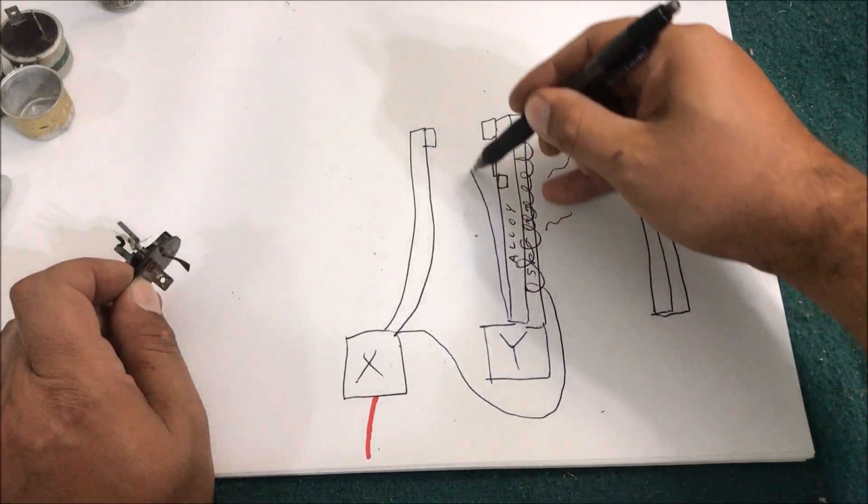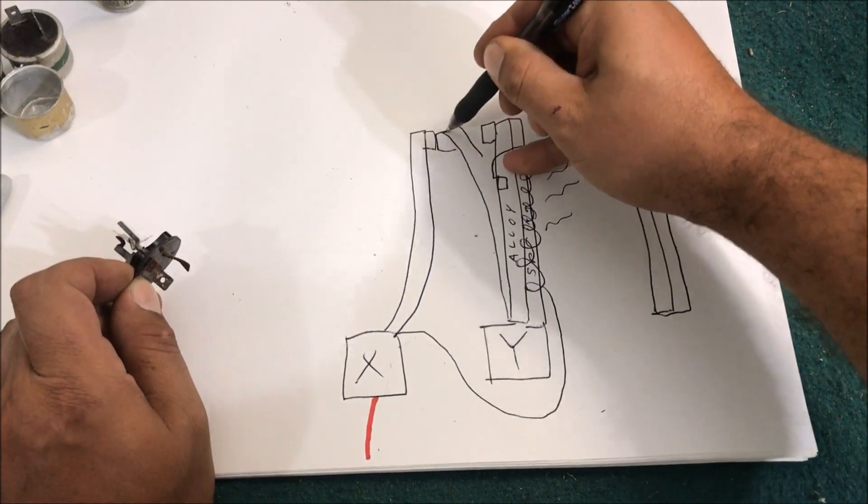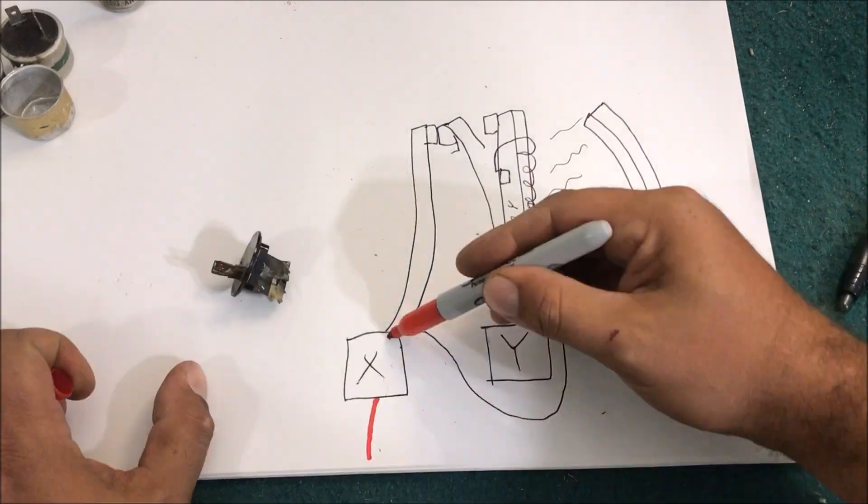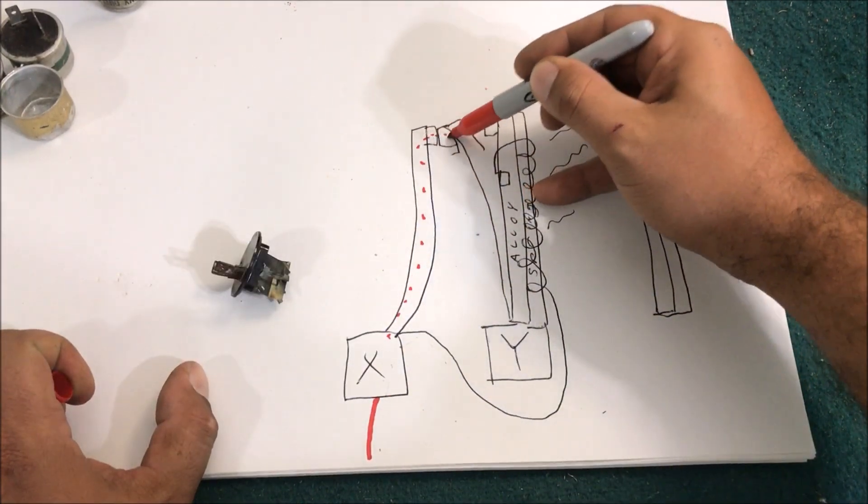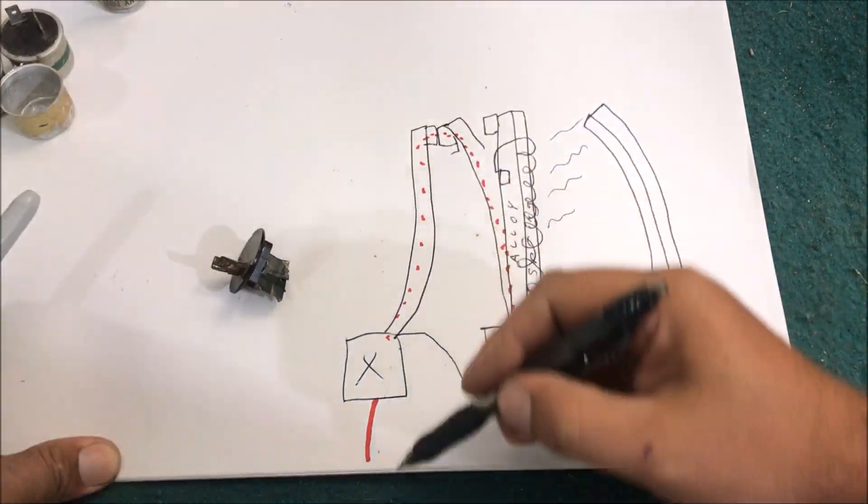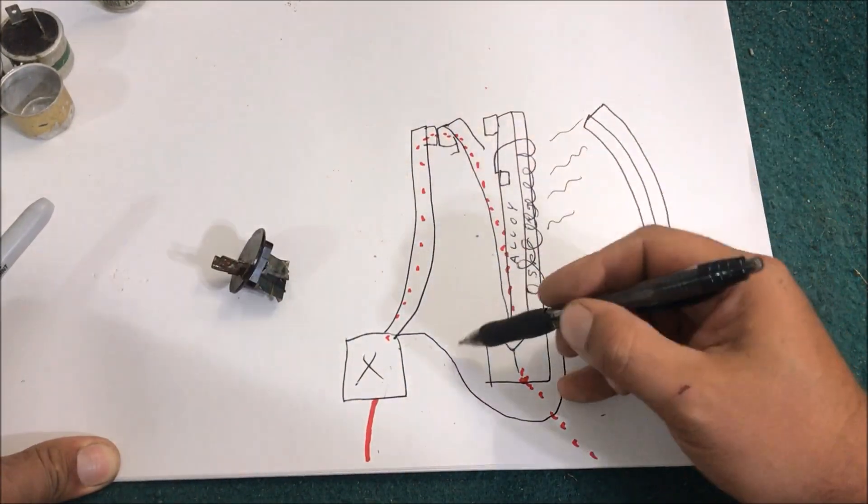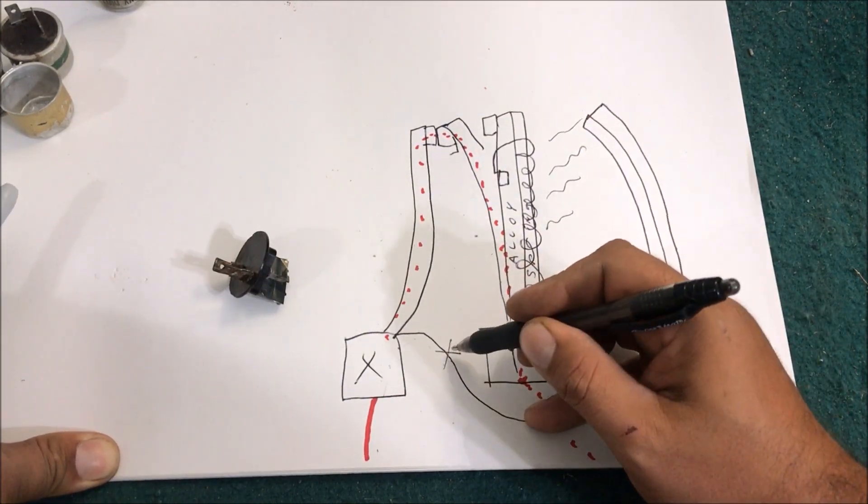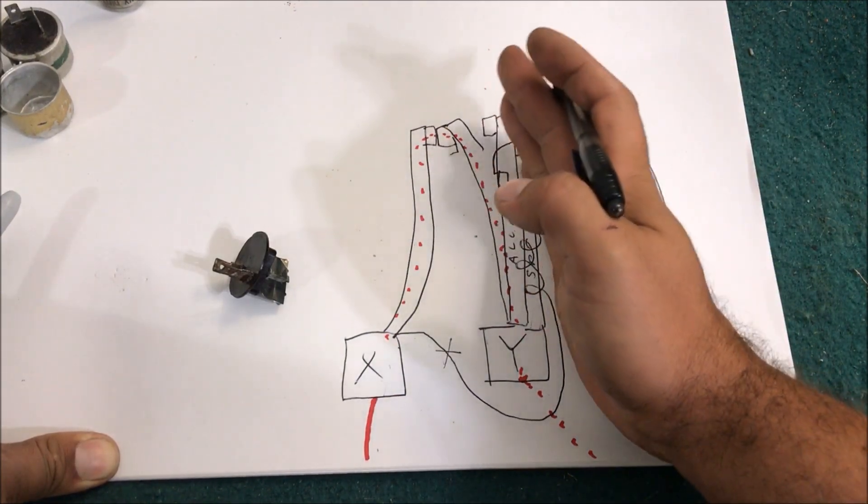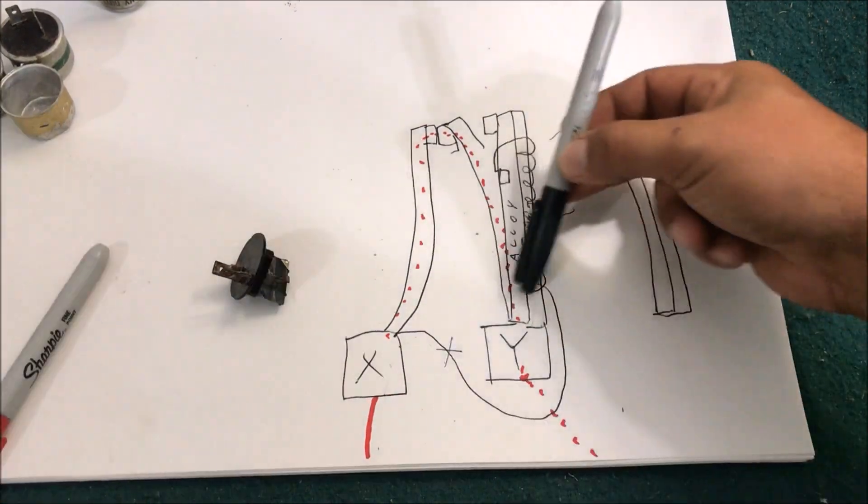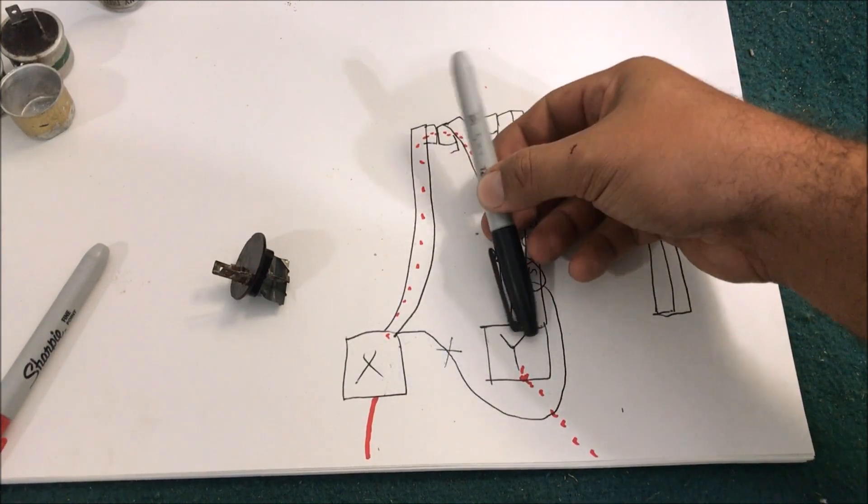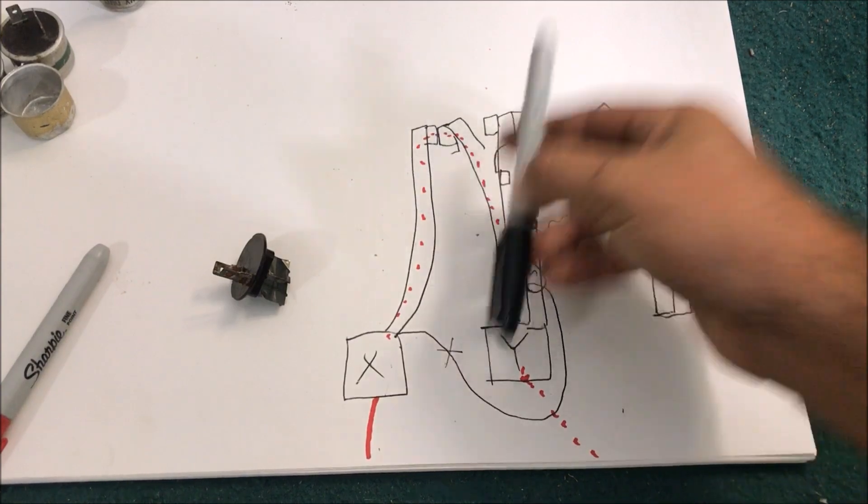So you turn your signal lights on, power is going through here heating the resistor up. And as it heats that resistor up it's going to bend that alloy, and when it bends the alloy it's going to connect that switch. So now instead of power going through the resistor, power is going through this and going to Y to your signal lights. And as that power is going through here, it's not going through here. In just a small amount of time for it not to go through there cools that down, and the spring steel brings it back up to where it's supposed to be, heating the resistor, closing the circuit, not heating the resistor, opening.